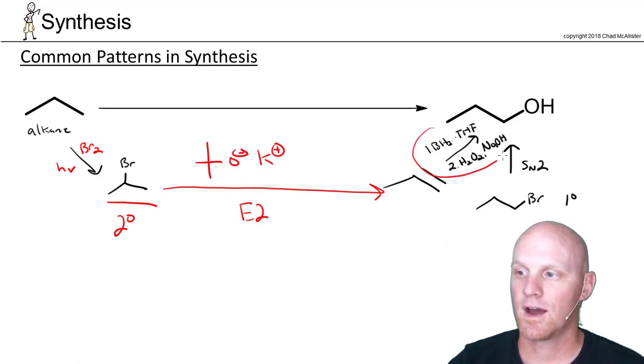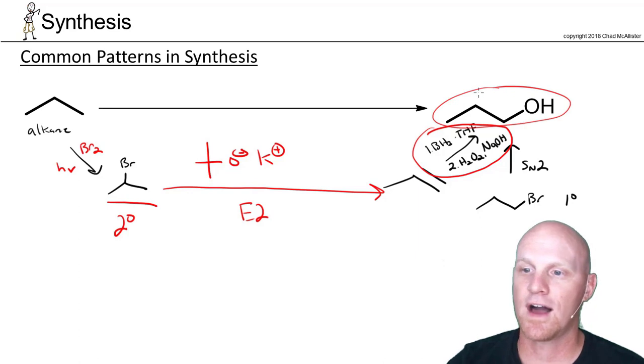Then we can do the hydroboration oxidation here, BH3THF with peroxide under basic conditions, and get anti-Markovnikov addition to get our alcohol. So very, you know, followed pretty much to a T the pattern we set forth in that last common synthesis pattern.